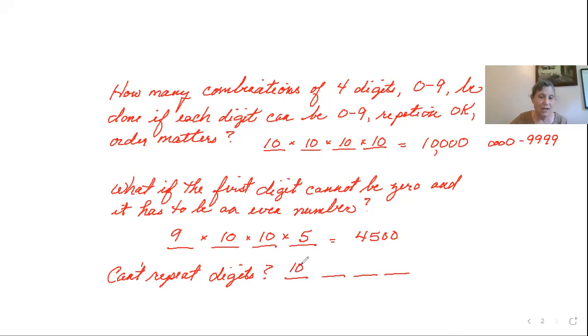If we cannot repeat digits, the first digit could be any of the 10, 0 through 9. But whatever it is, that's going to knock one of those out. So now we can only have 9 to choose from for the second position. We'll only have 8 to choose from for the third position, 7 to choose from for the fourth position.